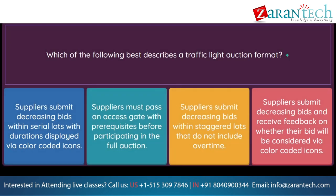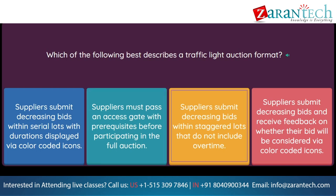Question: Which of the following best describes a traffic light auction format? Option 1: suppliers submit decreasing bids within serial lots with durations displayed via color-coded icons. Option 2: suppliers must pass an access gate with prerequisites before participating in the full auction. Option 3: suppliers submit decreasing bids within staggered lots that do not include overtime. Option 4: suppliers submit decreasing bids and receive feedback on whether their bid will be considered via color-coded icons.